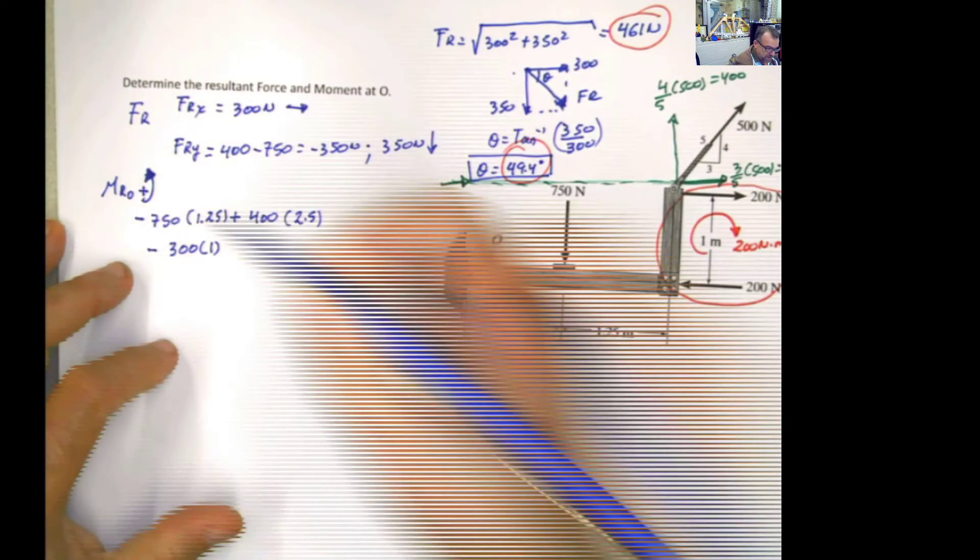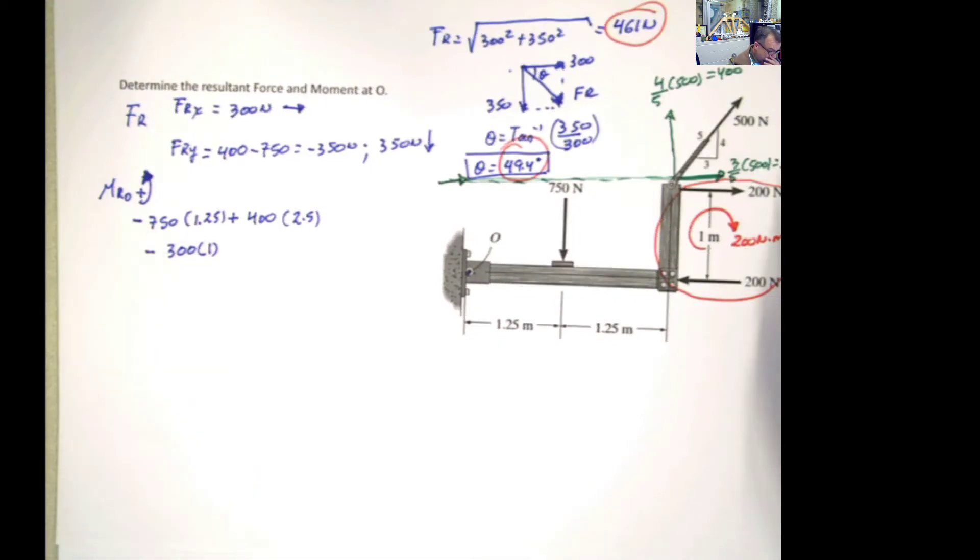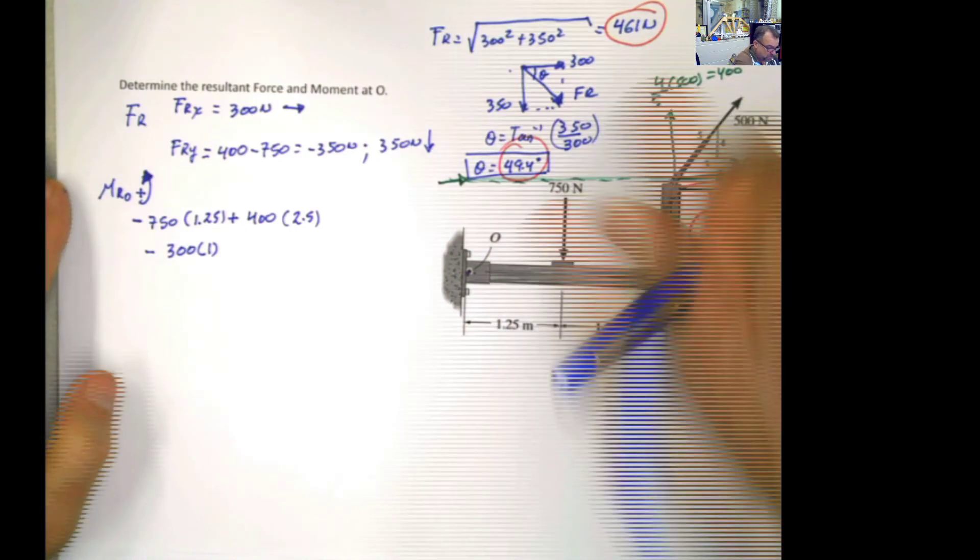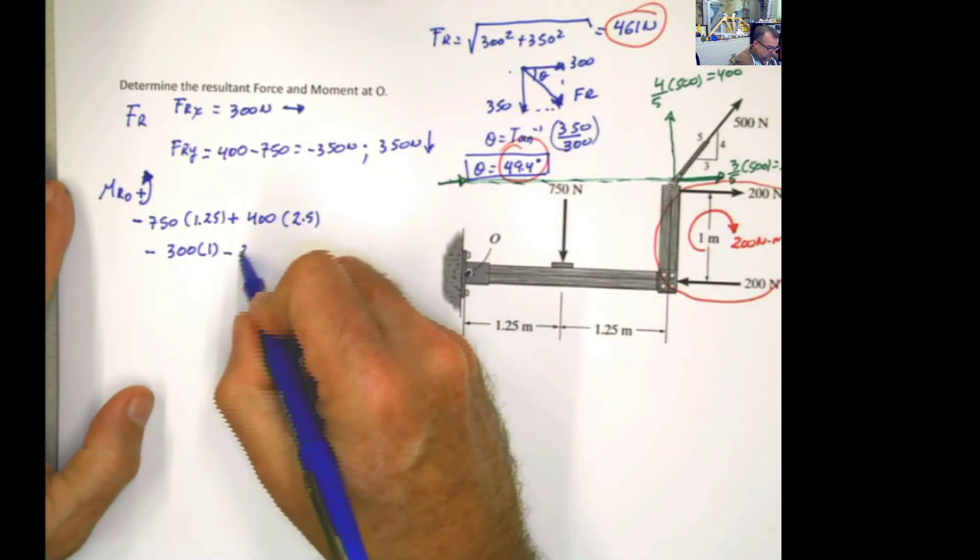The last thing are these two forces. But because I converted the two forces already into the moment, I just have to add this moment. The rotation of the moment is negative, and the value is 200.